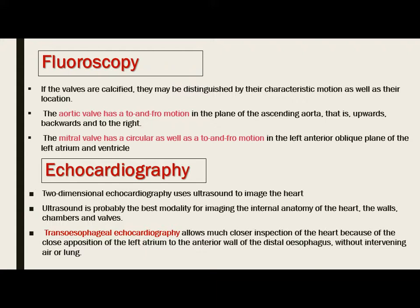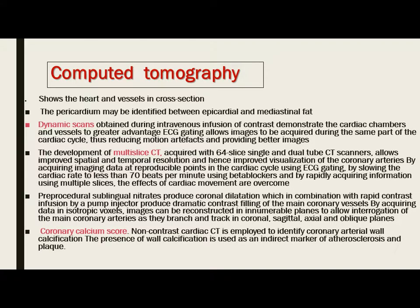Ultrasound is probably the best modality for imaging the internal anatomy of the heart — the walls, chambers and valves. Trans-esophageal echocardiography allows much closer inspection of the heart because of the close opposition of the left atrium to the anterior wall of the distal esophagus without intervening air or lung. On computed tomography, the heart and vessels are shown in cross-section. The pericardium may be identified between epicardial and mediastinal fat. On non-contrast CT, coronary arterial wall calcification may be seen, and its presence is used as an indirect marker of atherosclerosis and plaque. Dynamic or multi-slice CT with intravenous contrast demonstrates the cardiac chambers and vessels to great advantage.